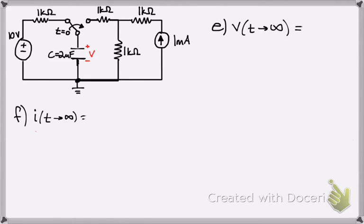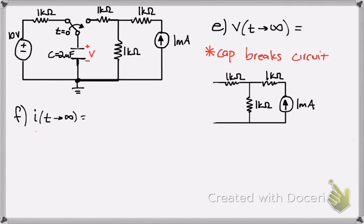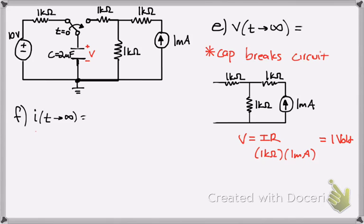Next is part E: what happens to this circuit as time goes to infinity — as if you just let it run forever. When the switch is thrown and time goes to infinity, the capacitor actually breaks the circuit because it gets so filled up with charge it just breaks, leaving an open circuit. But is there still a voltage? Yes. By V equals IR, with one kΩ and one milliamp, the voltage across that area — since it's in parallel — is one volt. Because you have the one milliamp source, the current is just one milliamp through that one kΩ resistor in parallel, giving one volt. So even though the current path through the capacitor is open, there can still be a voltage.